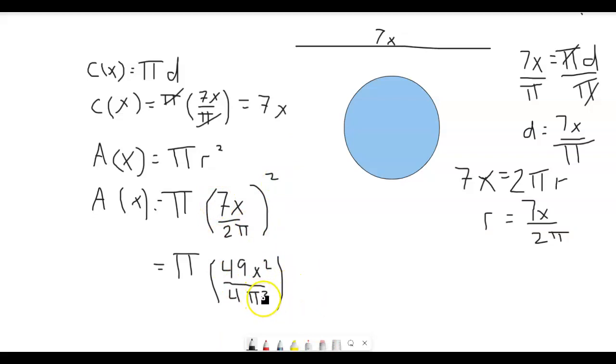Well, now we have a pi squared on the bottom. We have a pi on top, so I can get rid of one of those pi's on the bottom, one of the pi's on top, and then we can write this finally as 49x squared, x squared, all over 4 times pi, 4 times pi.